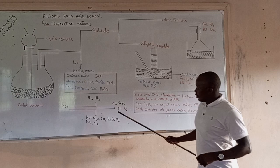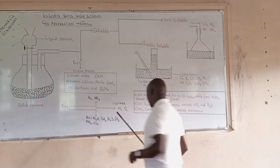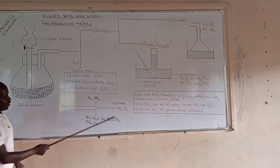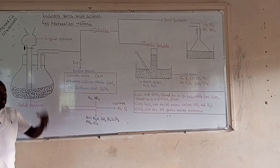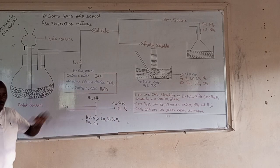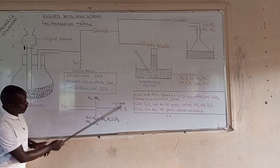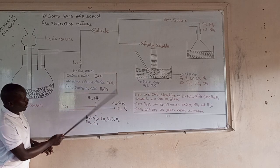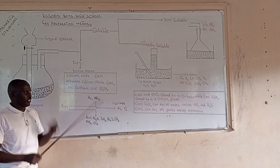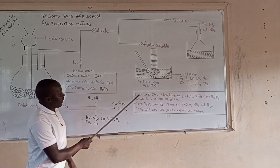Now we have nitrogen gas and oxygen gas. Dry nitrogen gas and oxygen gas cannot be collected by the upward delivery or the downward delivery method. So these gases — nitrogen gas and oxygen gas — are collected by the use of a syringe.